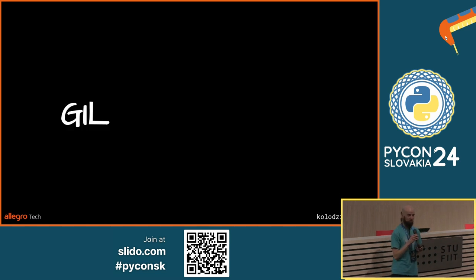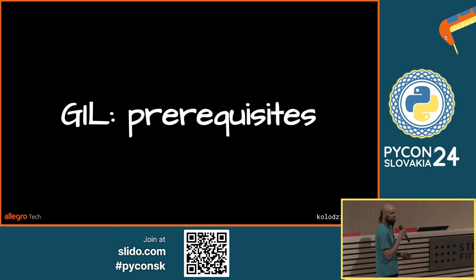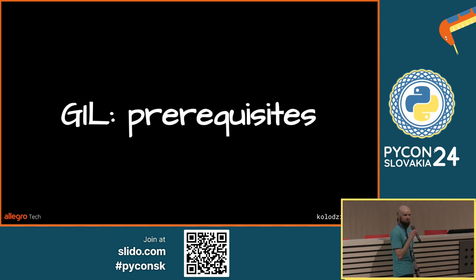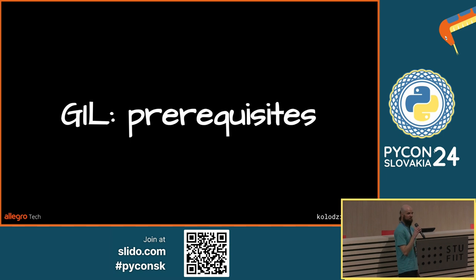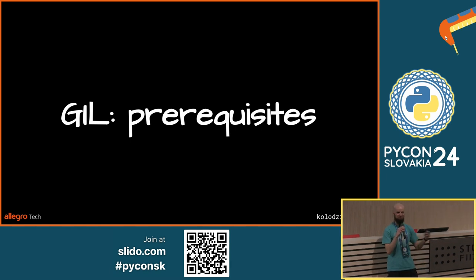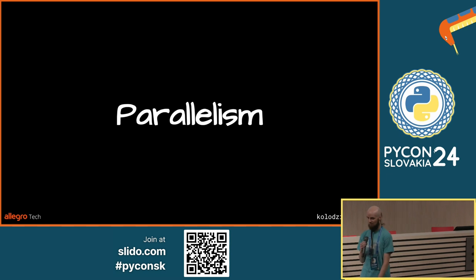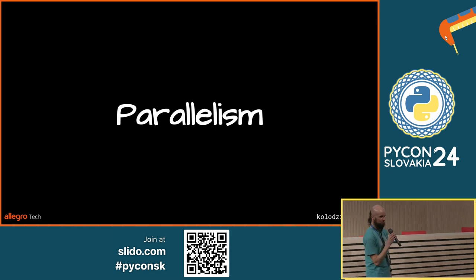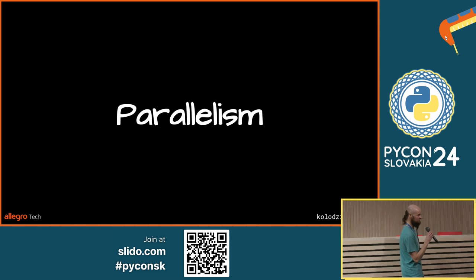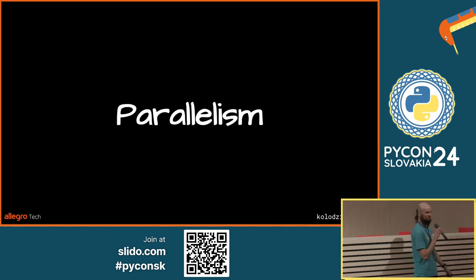I'm here to talk about the GIL. To talk about the GIL, it's very useful to go through some topics before that — and this is a long list of topics. But after we load all this information into our brain's caches, the GIL will be very easy to understand. The first thing: the GIL is to some degree about parallelism, so what even is parallelism?